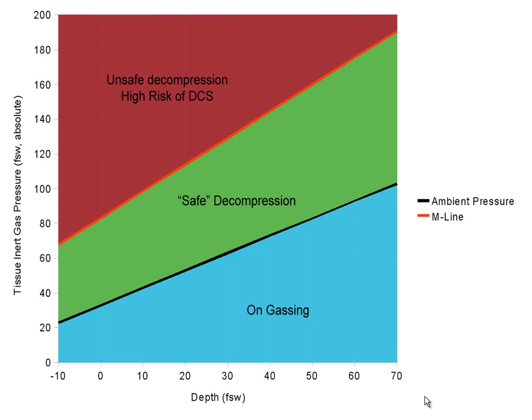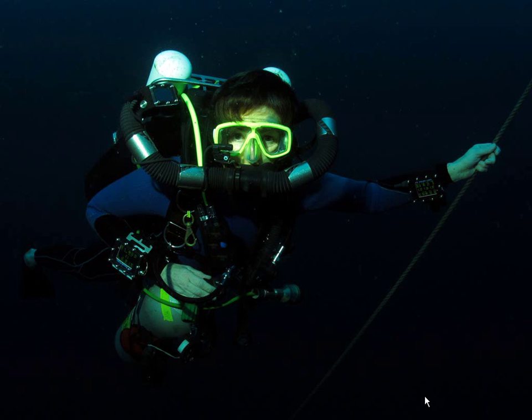The goal of a dive computer is to try and keep you in the safe decompression zone. There are a number of theoretical tissues within your body that don't relate to any particular actual tissues, but they have different rates of on-gassing and off-gassing, mainly based on perfusion and density. For example, bone is a very slow tissue, both on-gassing and off-gassing — it's typically dense and poorly perfused.